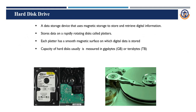The next one is the hard disk device. The hard disk is a storage device where all data, information, videos, and images are stored. Two or three years ago, most hard disks were 500GB; nowadays, 1TB hard disks are standard in new laptops. The hard disk uses a magnetic field to store data digitally in the form of 0s and 1s. Data is stored on rapidly rotating disks called platters, each of which has a smooth magnetic surface.